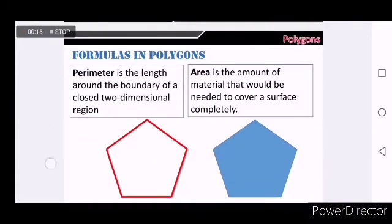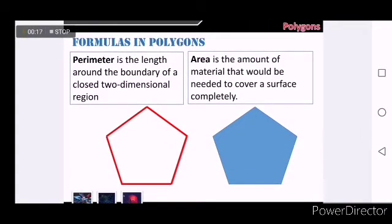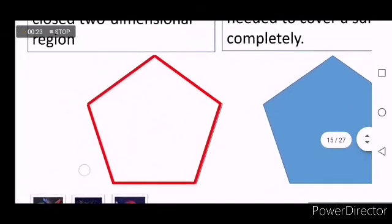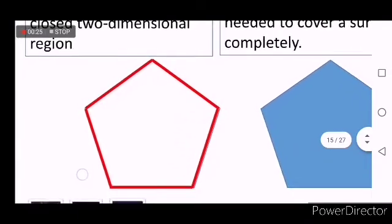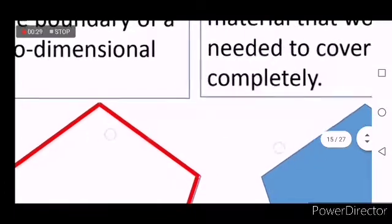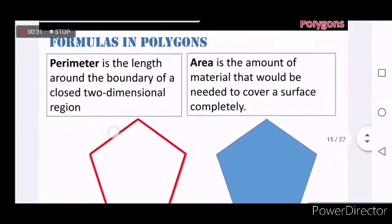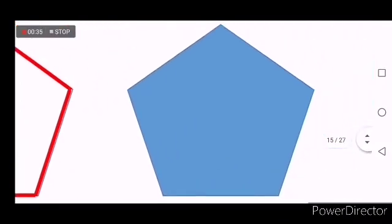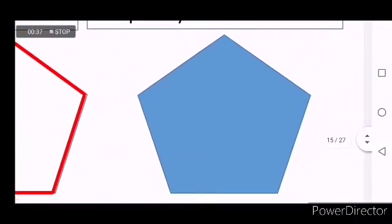Perimeter is the length around the boundary of a closed two-dimensional region. The sum of the length of all the red sides here is the perimeter. And the amount of material that would be needed to cover a surface completely, which is the blue area here, is called the area of the polygon.